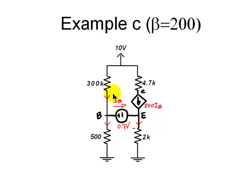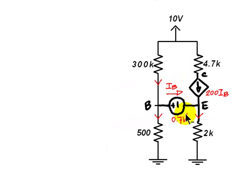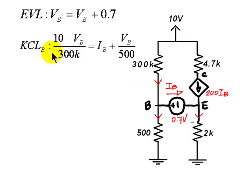In this circuit, I find the IB, VB. How? Let me use mesh and nodal analysis. First, an equivalent voltage loop equation for this branch. VB is higher than the voltage of the emitter by 0.7V, correct? And then, a couple of KCL equations, one for the base node. Currents going in, only 10 minus VB over 300 kiloohms, over here. And that is equal to currents leaving, the base current IB, plus the current through R2, VB over 500 ohms.